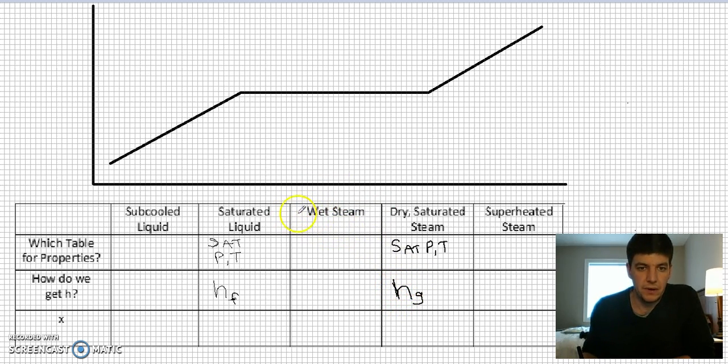What we're going to talk about now is what happens in this wet steam region. Well, we've got 100% liquid here. We've got 100% steam here. What if I was right in the middle? What do I have? Well, what I have is half liquid and half steam.